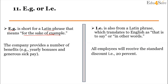For example: 'The company provides a number of benefits, e.g., yearly bonuses and generous sick pay.' Now, what is i.e.? I.e. is also a Latin phrase which translates to English as 'that is', 'to say', or 'in other words'. For example: 'All employees will receive the standard discount, i.e., 20%.'